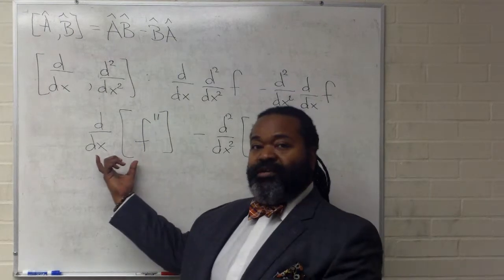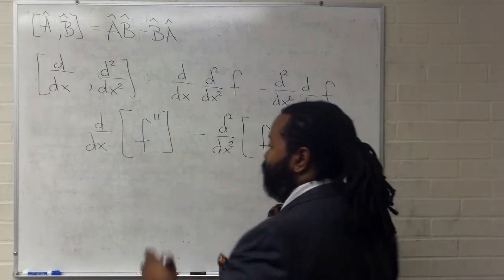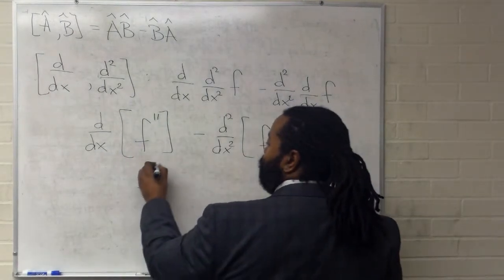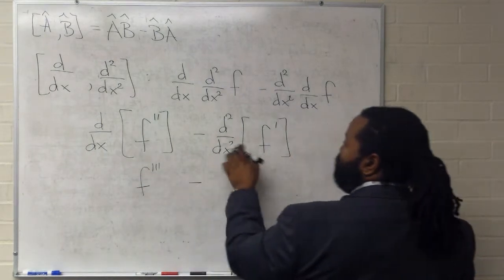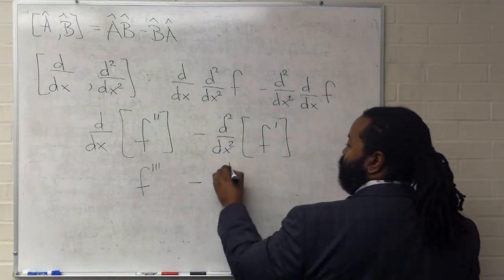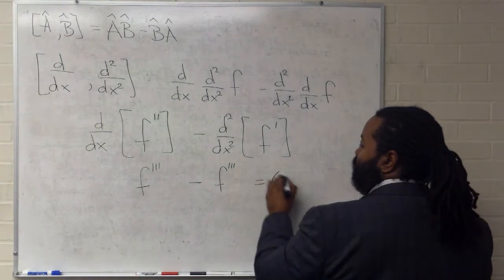And now we carry out this step, so we will get F triple prime, minus F triple prime. And that's going to be zero.